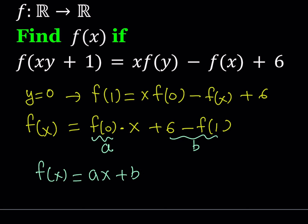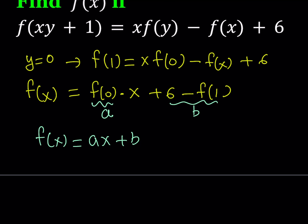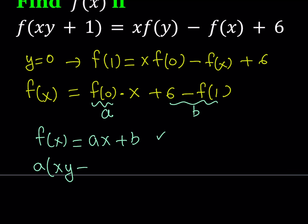This really simplifies the process. Now to find the values of a and b, we can substitute f of x equals ax plus b back into the original equation. Replacing x with xy plus 1, f of xy plus 1 becomes a times the quantity xy plus 1, plus b.